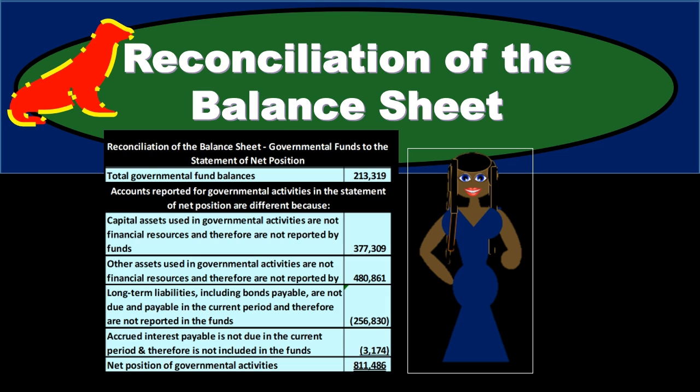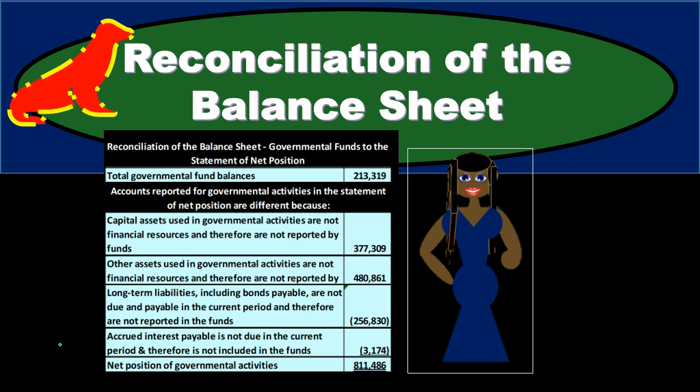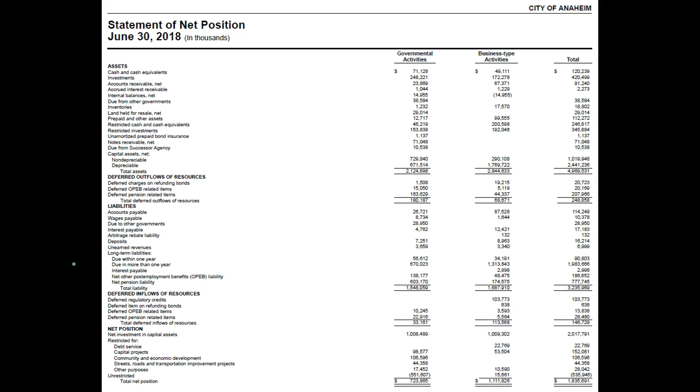Those are going to be some of the reconciliation items. All we're going to do is go through and list out what the reconciliation items are — the total governmental fund balance, the net position of the governmental activities balance — and describe as best we can what those differences are between the two.